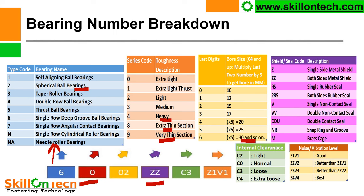The suffix digits indicate: Z = single side metal shielded; ZZ = both side metal shielded; RS = single rubber seal; 2RS = both side rubber seal; V = single non-contact seal; VV = double non-contact seal; DDU = double contact seal; NR = snap ring and groove; M = brass cage. The suffix C3 indicates internal clearance: C2 = tight, C0 = normal, C3 = loose, C4 = extra loose clearance.